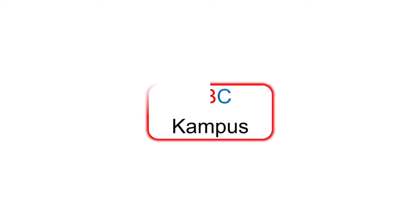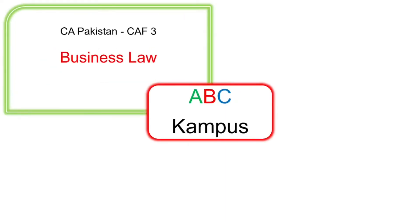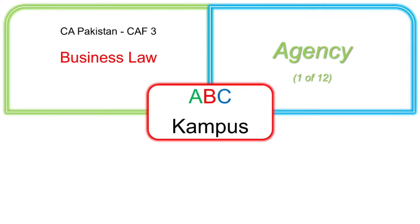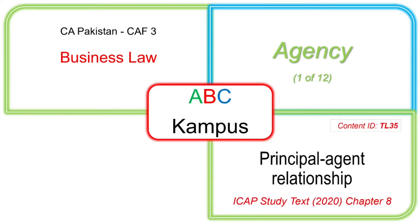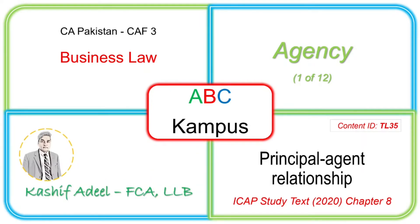Welcome to ABC Campus. Our subject is CAV3 Business Law, Chapter Number Eight: Agency. This is the first video on this chapter, relating to principal and agent relationship from ICAP Study Text 2020. I am your facilitator, Kasha Fadil.